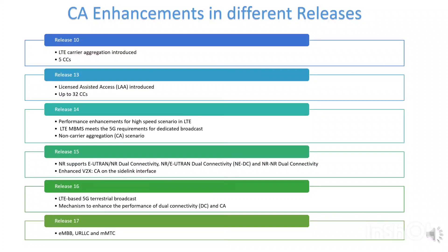Release 14 only considered the non-CA scenario. Release 14 LTE MBMS, Multimedia Broadcast Multicast Services, meets the 5G requirements for dedicated broadcast. Release 15 new radio supports EN-DC new radio dual connectivity. Release 15 enhanced V2X by introducing features such as carrier aggregation on the sidelink interface, 64QAM, reduced latency, and a feasibility study on transmission diversity and short TTI for the sidelink. Release 16 considered LTE-based 5G terrestrial broadcast with the objective to define additional numerologies for the physical multicast channel. Release 16 also considers additional mechanisms to enhance the performance of dual connectivity and CA, and enhances the base architecture of Release 15 with features like enhanced service-based architecture, improved flexible deployments of session management control function and user plane function, support for commercial services using location-based service architecture, enhancements to UE capability signaling, self-organizing networks, and dual connectivity and carrier aggregation enhancements.